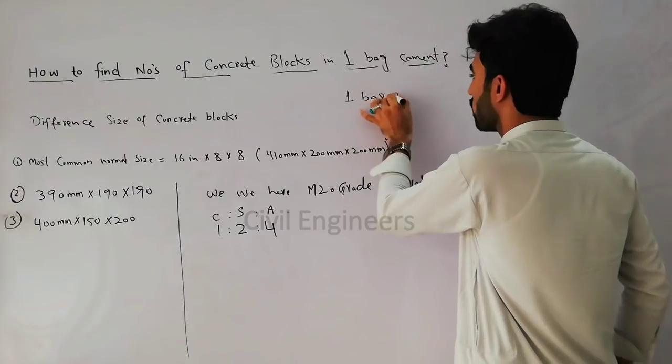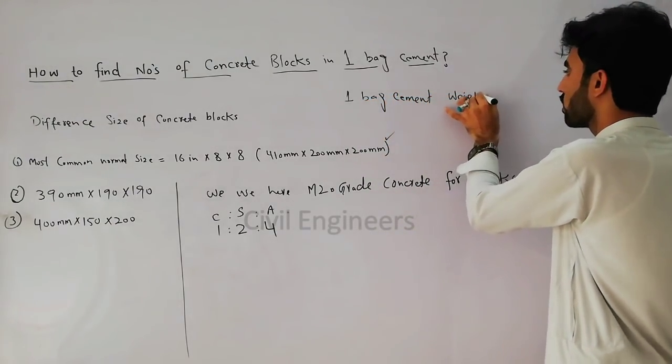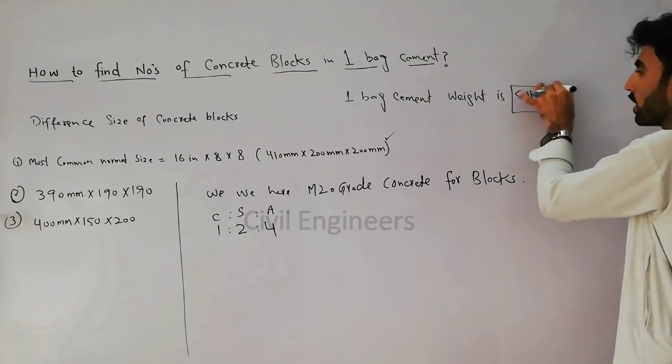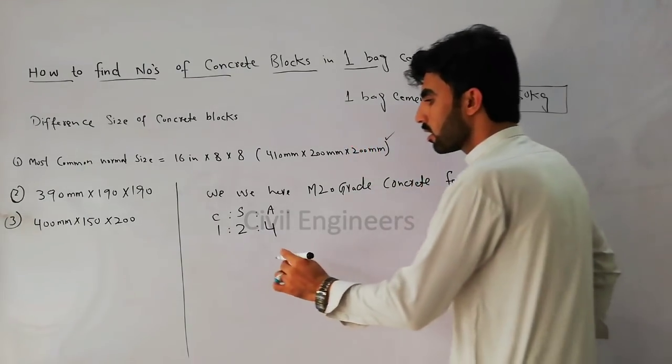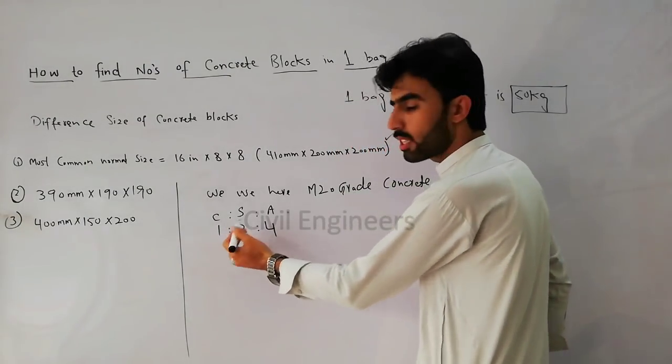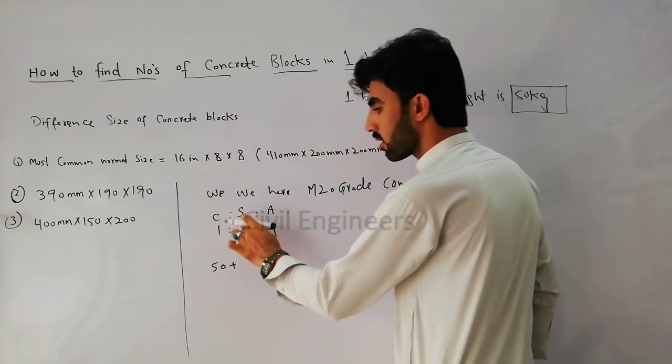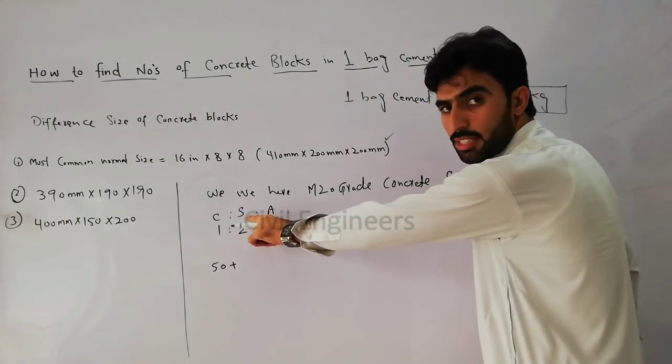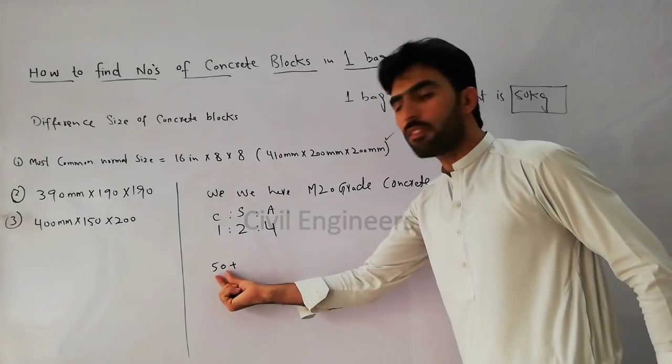So here, one bag of cement is 50 kg plus two parts of sand. If I use double of the cement, it will come 50 times 2 equals 100.